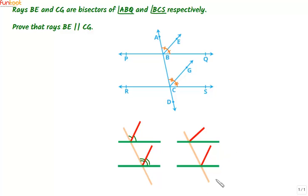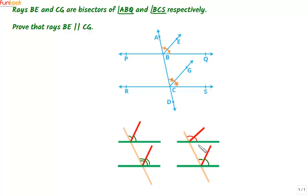In the second arrangement of straws, the green straws are parallel as in the previous case. However, one red straw is the bisector of its angle, but the other red straw is not the bisector of its angle, and we can see that the red straws in this case are not parallel. So when the red straws are not bisectors of the corresponding angles, they are not parallel.